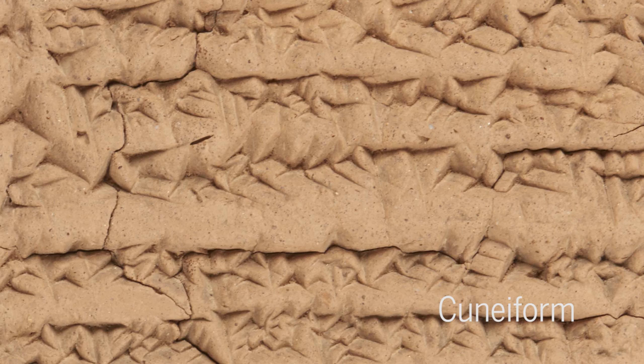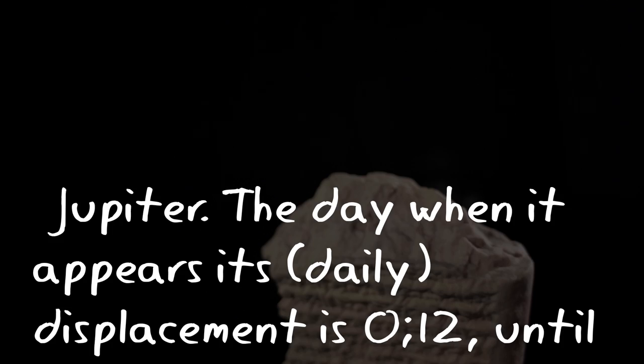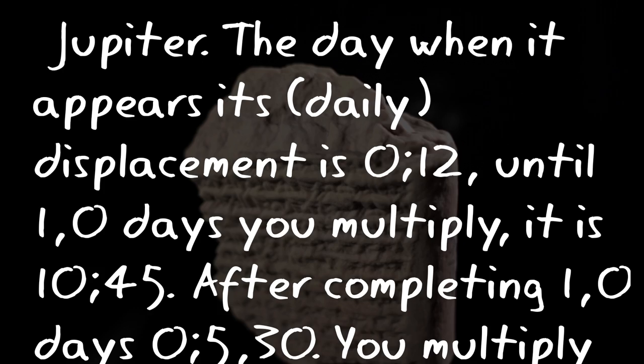Babylonian astronomers meticulously recorded their observations in cuneiform on clay tablets using simple mathematics. But the recent translation of several tablets shows that the Babylonians did something more.